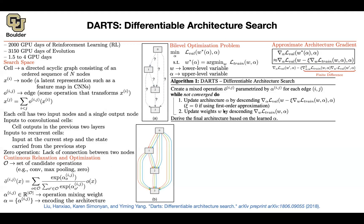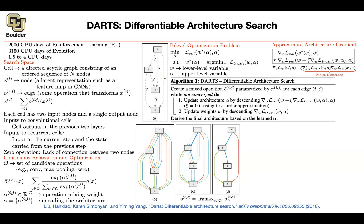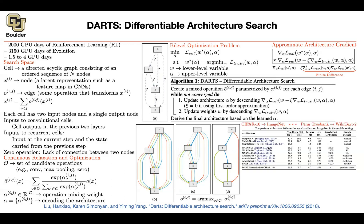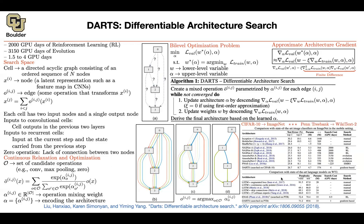Once you have your gradients, you can do gradient descent to optimize both alpha and omega. Initially you started with equal weights for all operations; now some will have higher weights. You only keep the highest weights to get your final architecture by taking an argmax over your alphas. That picks out which edges and operations to use, and then you can evaluate the performance on ImageNet using a network trained on CIFAR-10, or apply it to recurrent neural networks.